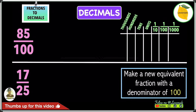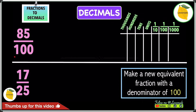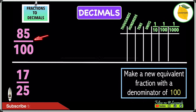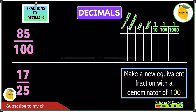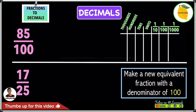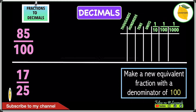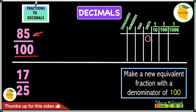Now let's convert the next set of fractions into decimals. The examples are 85 over 100 and 17 over 25. Any fraction with a denominator of 10, 100, or 1000 is easy to convert. For 85 over 100, we first check: does this fraction have any whole numbers? No it does not, so we write a 0 in the units column.